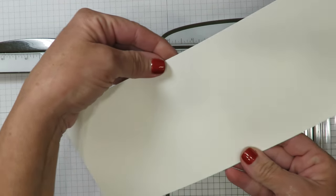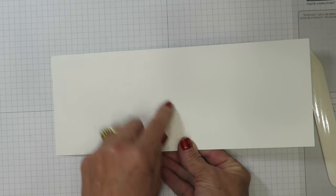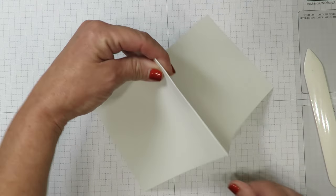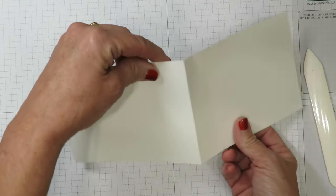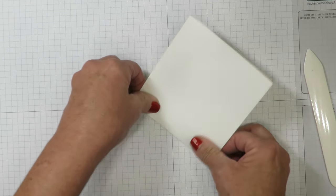So we have three score lines here. I'm going to be using my bone folder to help crispen up those creases. The score line that's in the center I want you to fold it up. That's what we call a mountain fold. And then the other two are going to go down. So I'm going to fold that down and this down.